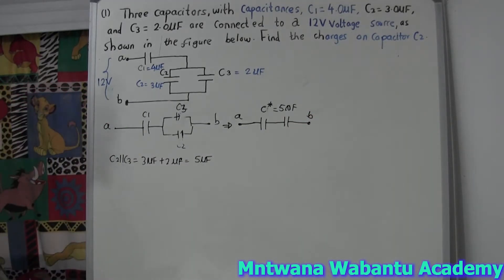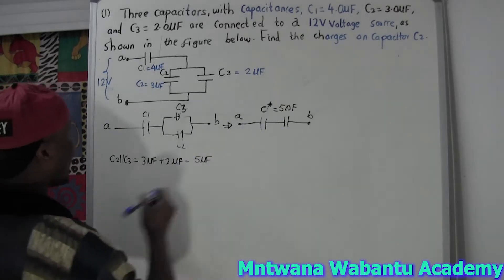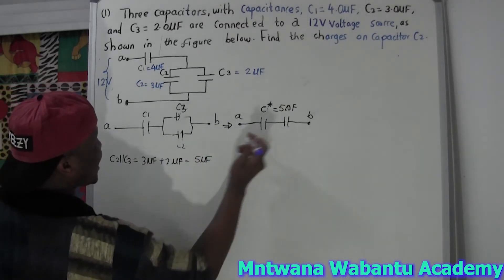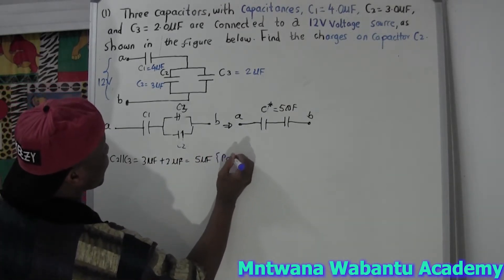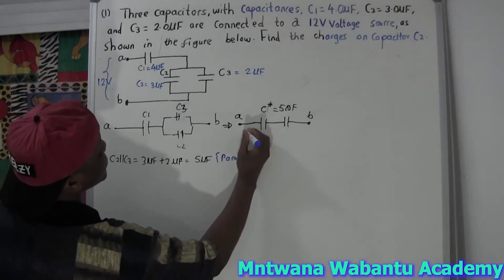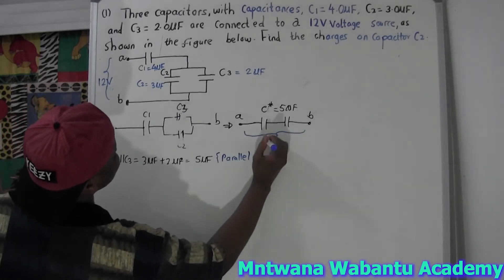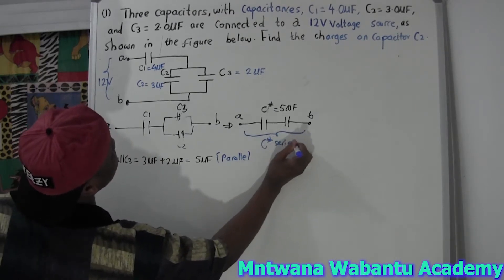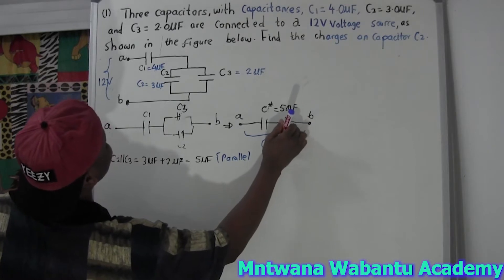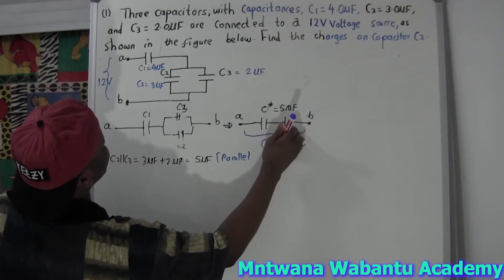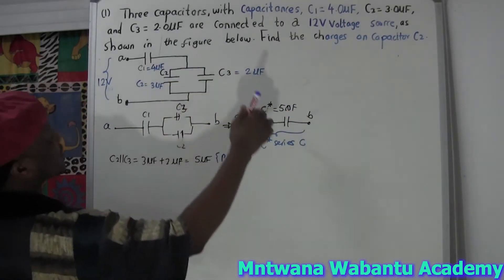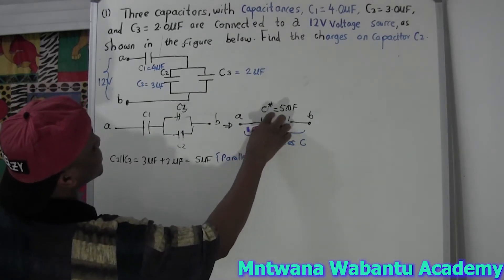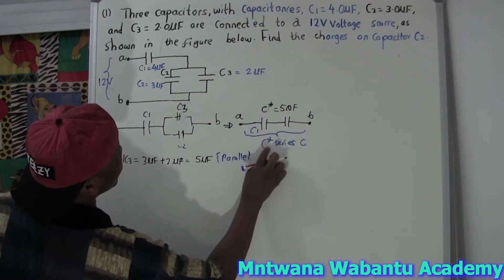Now let's find the equivalent capacitance. C1 and C-star are in series with each other. When capacitors are in series, you use the formula: one over C-equivalent equals one over C1 plus one over C-star.